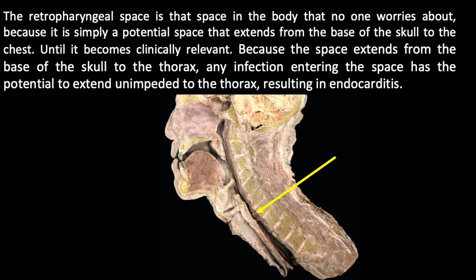The retropharyngeal space is that space in the body that no one worries about because it is simply a potential space that extends from the base of the skull to the chest until it becomes clinically relevant. Because the space extends from the base of the skull to the thorax, any infection entering the space has the potential to extend unimpeded to the thorax, resulting in mediastinitis.